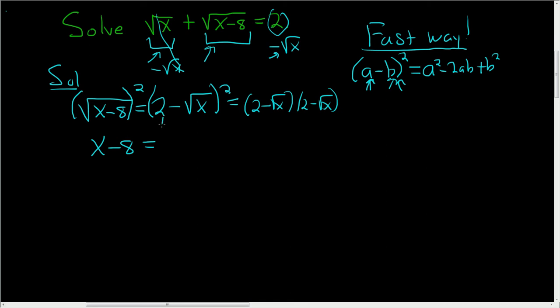So here, a is the 2, that's the first piece, so 2 squared is 4, minus, now 2 times the square root of x is just 2 square root of x. You double it, you get 4 square root of x.